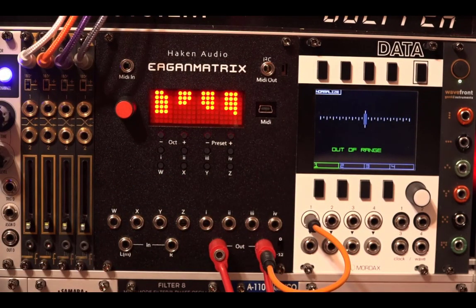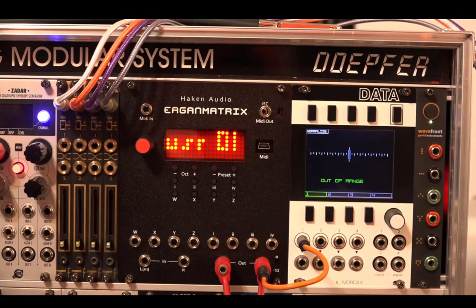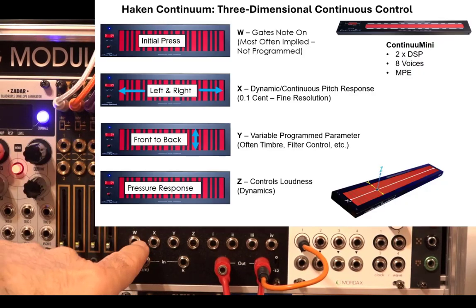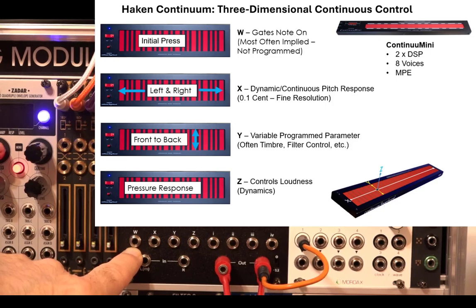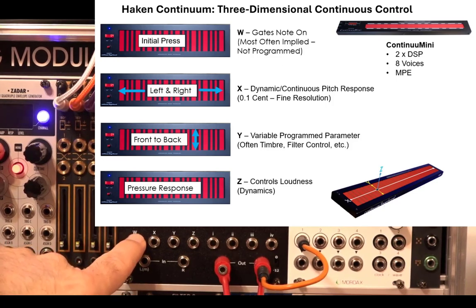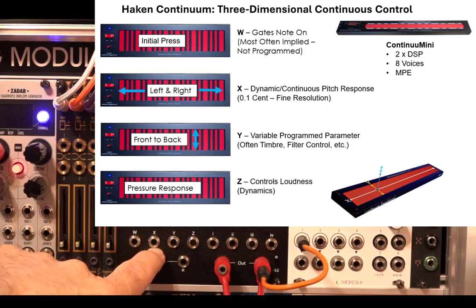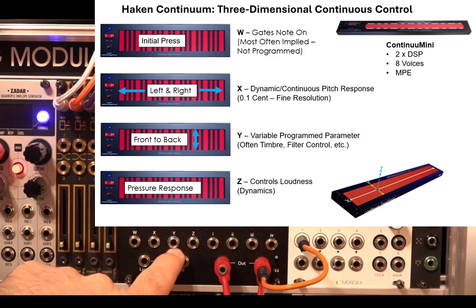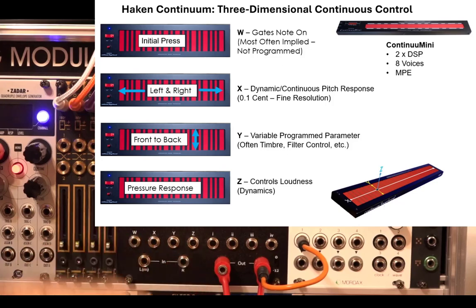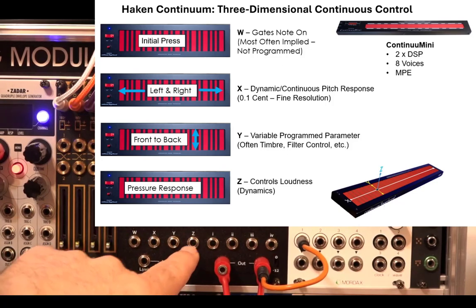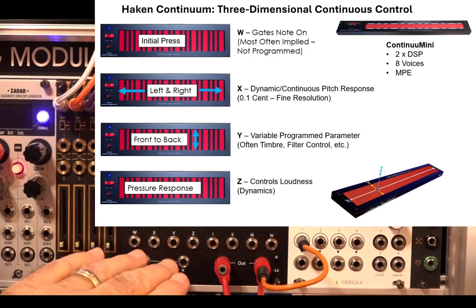Because this is an implementation of a Continuum on a Eurorack module, it uses Continuum descriptions for these inputs. W on a Continuum is typically a gate — when you press the fingerboard, a note gates on, even though W might not be used in the preset itself. For the purposes of the module, we'll always want to gate our sounds. X is the continuous pitch — that will be a one volt per octave input. Y is front-to-back motion on a Continuum; some presets use it, some don't. Z is your dynamic pressure — your loudness or volume. Although Z can be used for other purposes in a preset, to start out, just think of it that way.